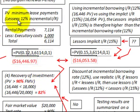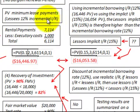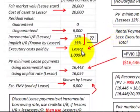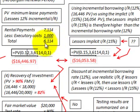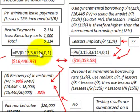The fourth test is recovery of investment, using the present value of minimum lease payments. Starting with the lessee's 12% incremental rate, our rental payments are $7,114. Because the lessor is paying executory costs, the $1,000 must be subtracted from the rental payment, leaving $6,114 to discount. Discounting $6,114 for three years at 12% gives a present value of minimum lease payments of $16,446.